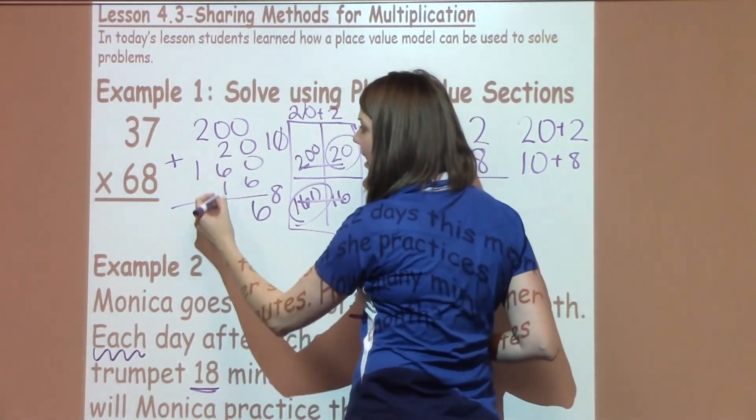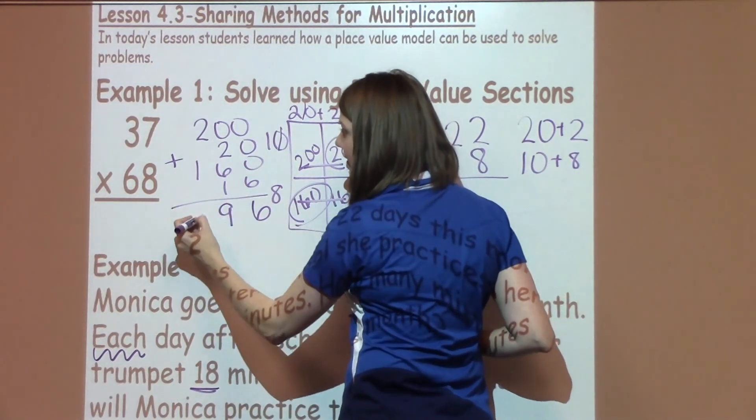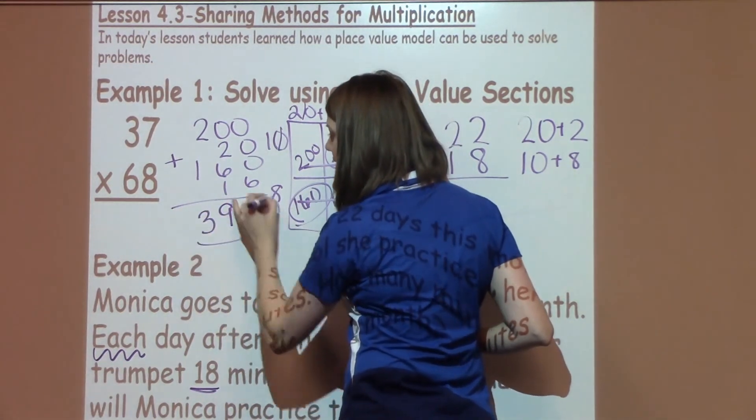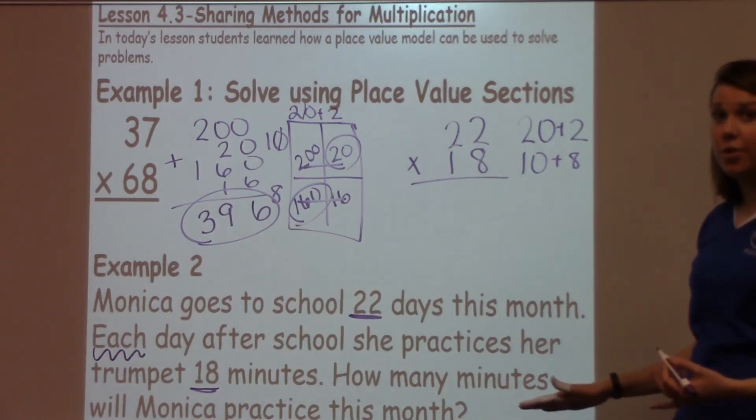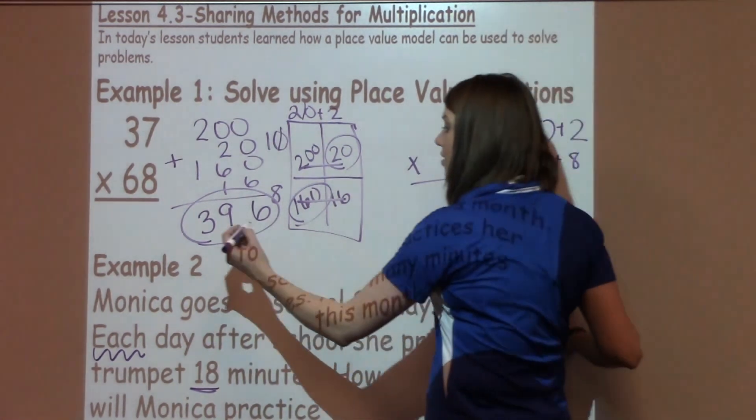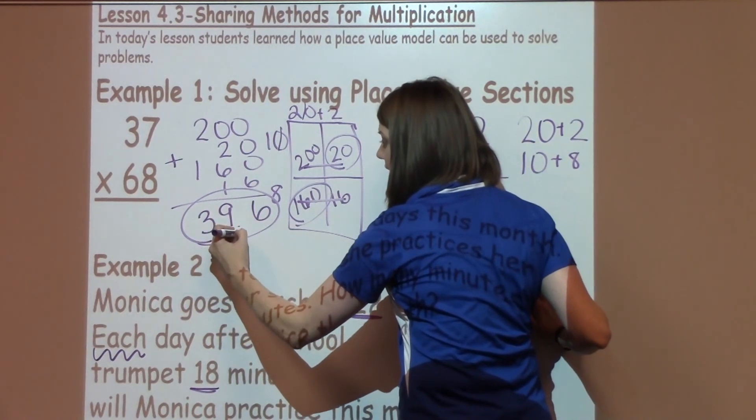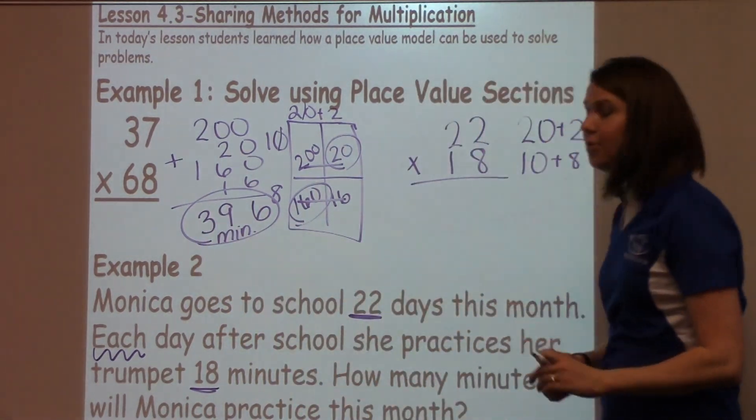So when I add these, I have 6. I have 9. And then I have 3. So my answer is 396. To finalize this answer, you need to go ahead and put a label on it, which is going to be minutes. So Monica is going to practice 396 minutes after school.